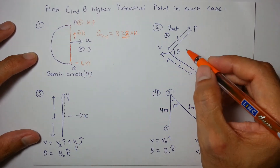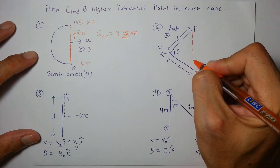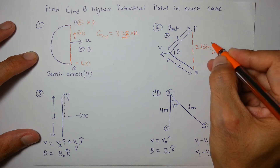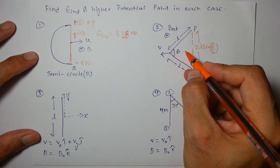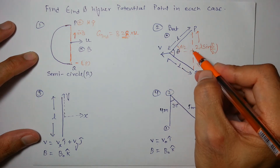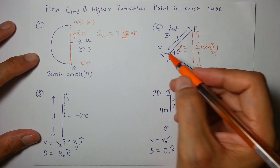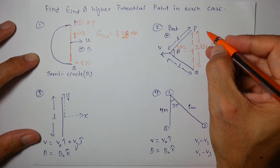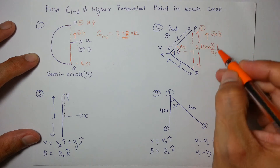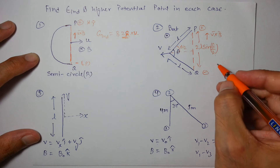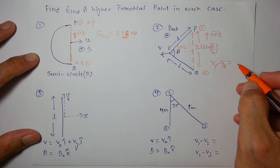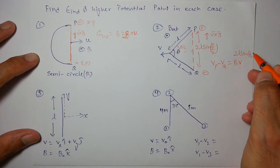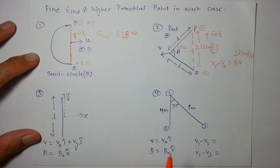For the next case, the effective length is found by joining the endpoints, which gives 2L sin(θ/2). We can verify this mathematically: in the right angle triangle, θ/2 is the angle, one side is L sin(θ/2), and doubling gives 2L sin(θ/2). Velocity is given and magnetic field is out of the plane of paper. Doing V cross B, this terminal becomes positive and the other negative, so V_P minus V_Q is positive B × V × 2L sin(θ/2), as all three are mutually perpendicular.